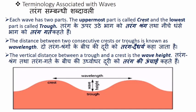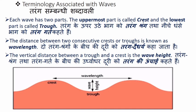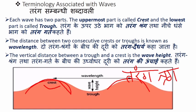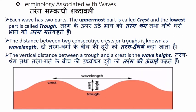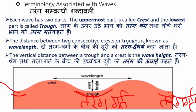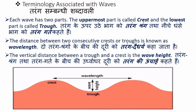Let us discuss the terminology associated with waves — तरंगों से संबंधित शब्दावली. Each wave has two parts: the uppermost part is called the crest (तरंग श्रृंग in Hindi), and the lowest part is called the trough (तरंग गर्त in Hindi). So the upper raised part is the crest and the lower part is the trough.